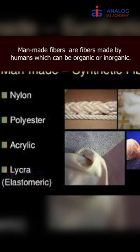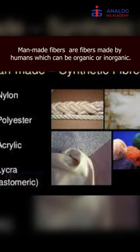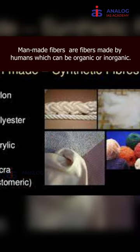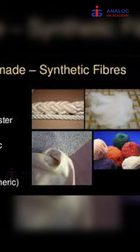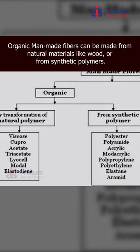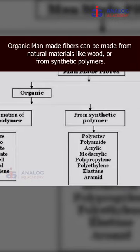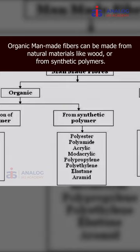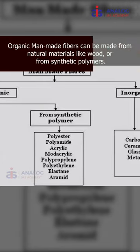What are manmade fibers? Manmade fibers are fibers made by humans, which can be organic or inorganic. Organic manmade fibers can be made from natural materials like wood, or from synthetic polymers.